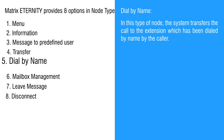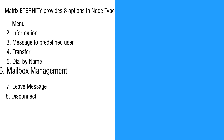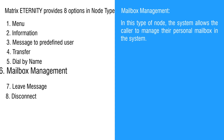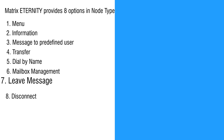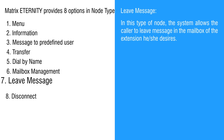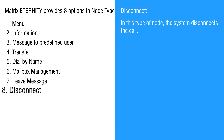Dial by name: the system transfers the call to the extension dialed by name by the caller. Mailbox management: the system allows the caller to manage their personal mailbox in the system. Leave message: the system allows the caller to leave a message in the mailbox of an extension he or she desires. Disconnect: the system disconnects the call.